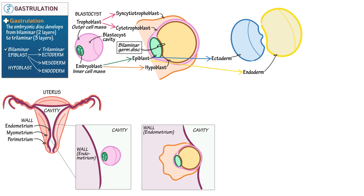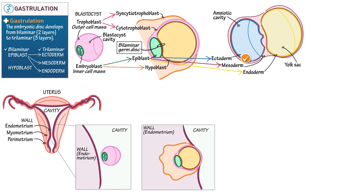Note that, although it's classically taught that the endoderm completely replaces the hypoblast, some of the original hypoblast is indeed integrated into this new endodermal cell line. The amniotic cavity is the space that the ectodermal cell line fills, and the yolk sac is the space that the endodermal cell line fills. Space exists between the ectoderm and endoderm, which is filled by mesoderm — specifically intraembryonic as opposed to extraembryonic mesoderm, as we'll come to understand later.